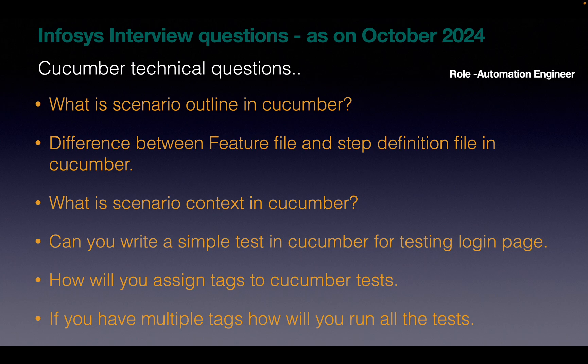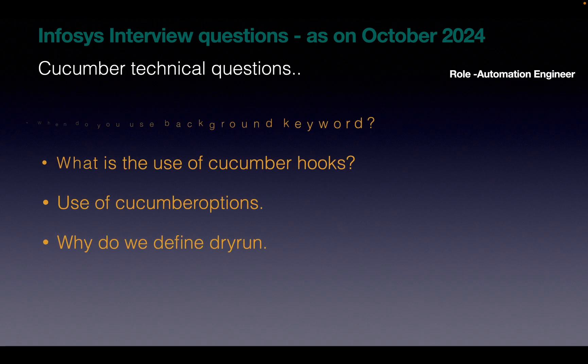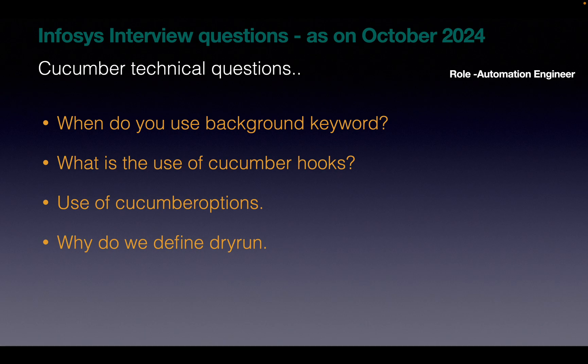The next question: if you have multiple tags, how will you run all the tests? You can use the AND keyword in between the tags to run multiple tags at the same time — for example, smoke, regression, or mobile-related test cases. The next question: when do you use the background keyword? When there is a step which is common to all the scenarios in the feature file, we use the background keyword to eliminate that common step and avoid repetitions.